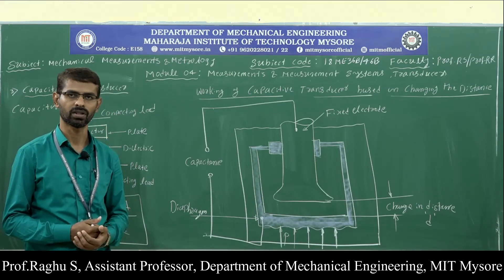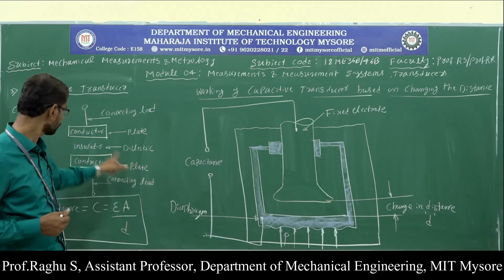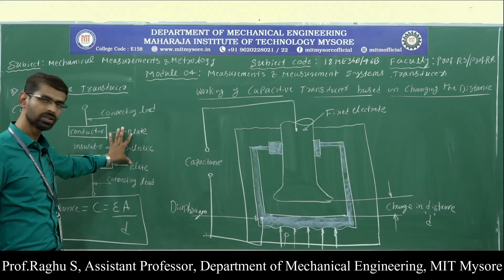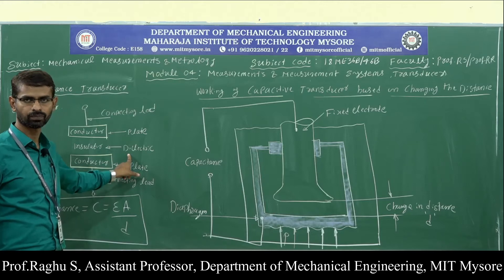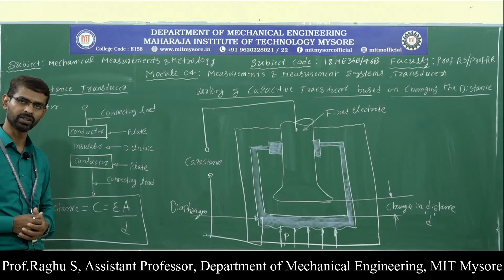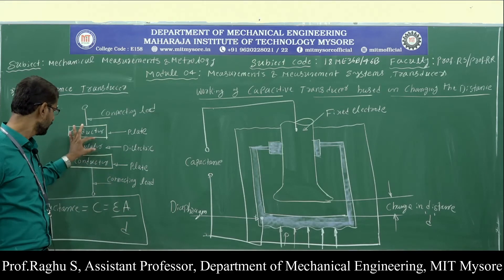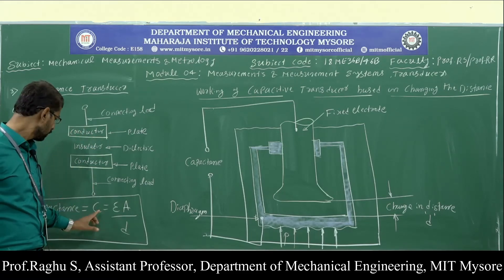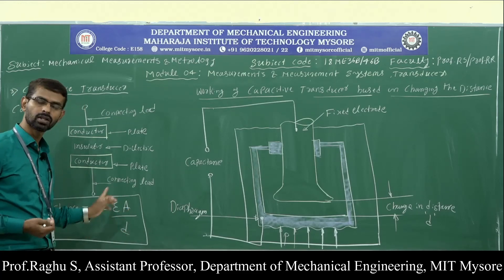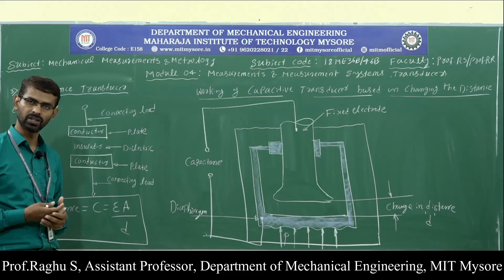Before discussing the capacitive transducer, let us first understand the capacitor and capacitance. A capacitor stores electrical energy and releases it to the circuit when necessary. It consists of two conducting surfaces called plates, separated by an insulating material called the dielectric medium. Capacitance is the ability of a capacitor to store electricity, given by C = εA/D, where A is the area of the plates and D is the distance between the two plates. Capacitance depends on both area and distance.